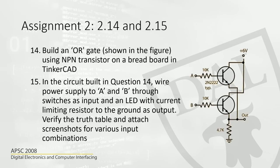Questions 14 and 15 are the last part of assignment 2. Question 14: you are building an OR gate. We know how to build an OR gate with an NPN transistor. To get an NPN transistor in Tinkercad, just type in NPN and you will see one. This might seem complex but it is not — you just have to practice. Try to use a breadboard to do this.